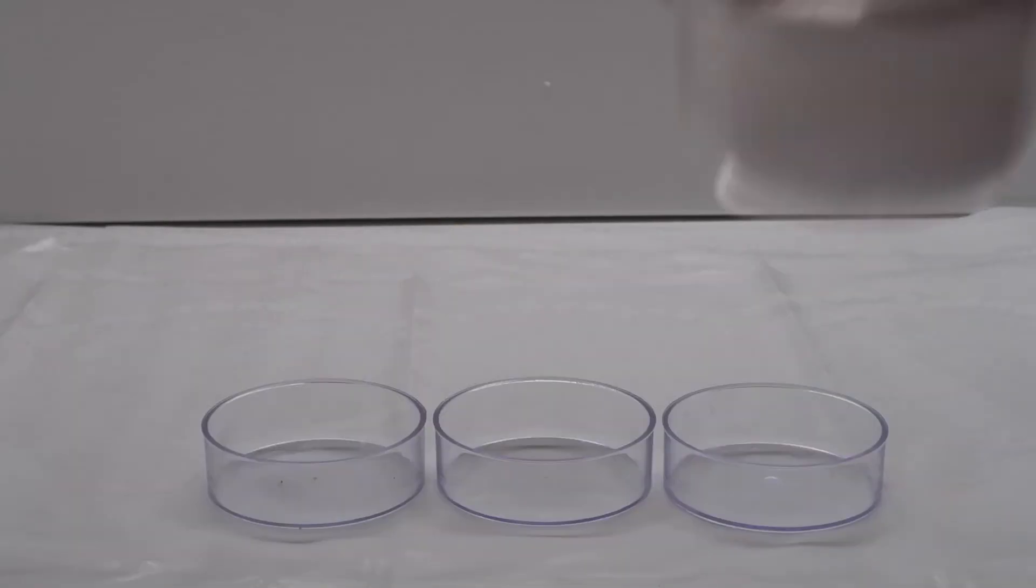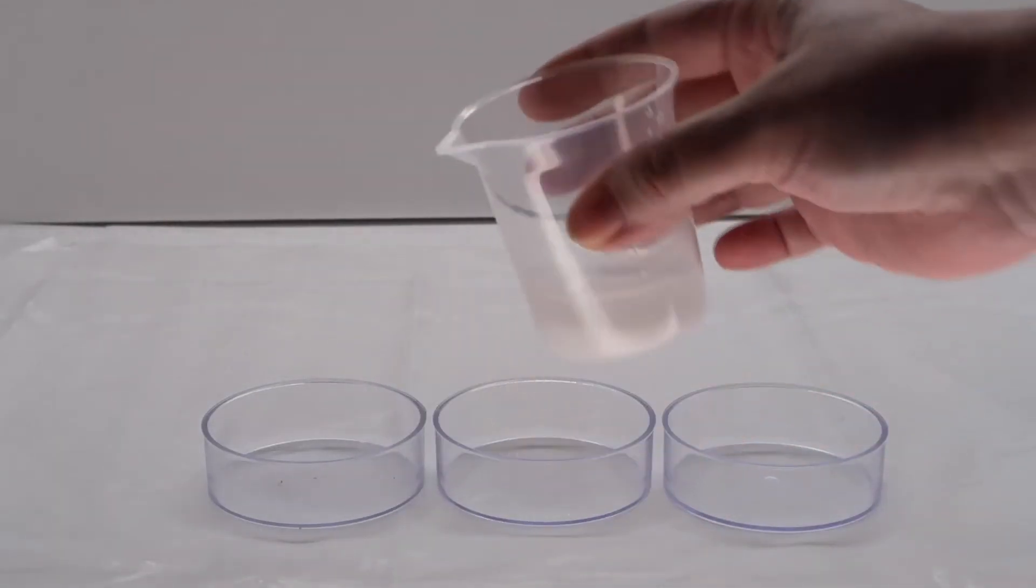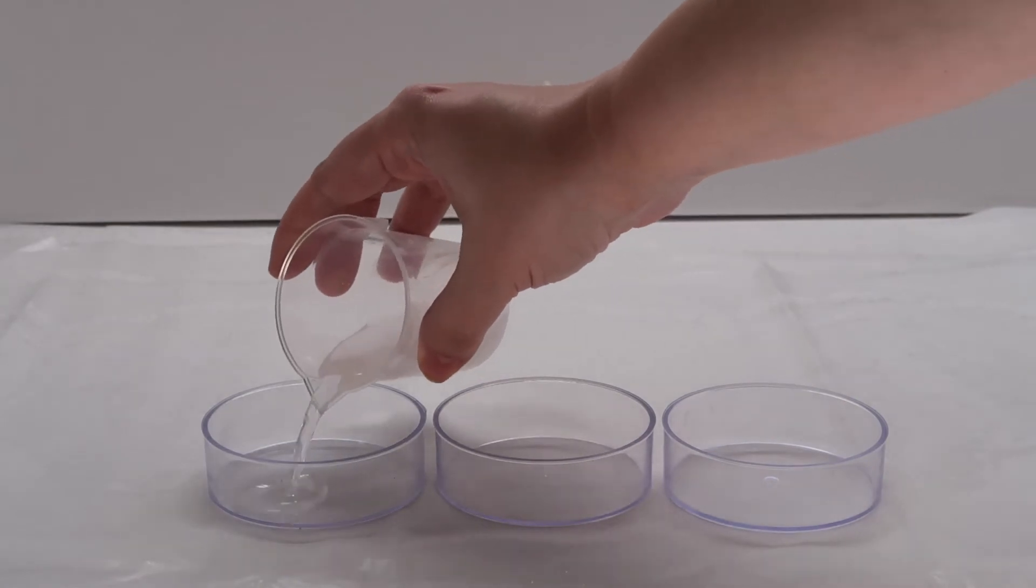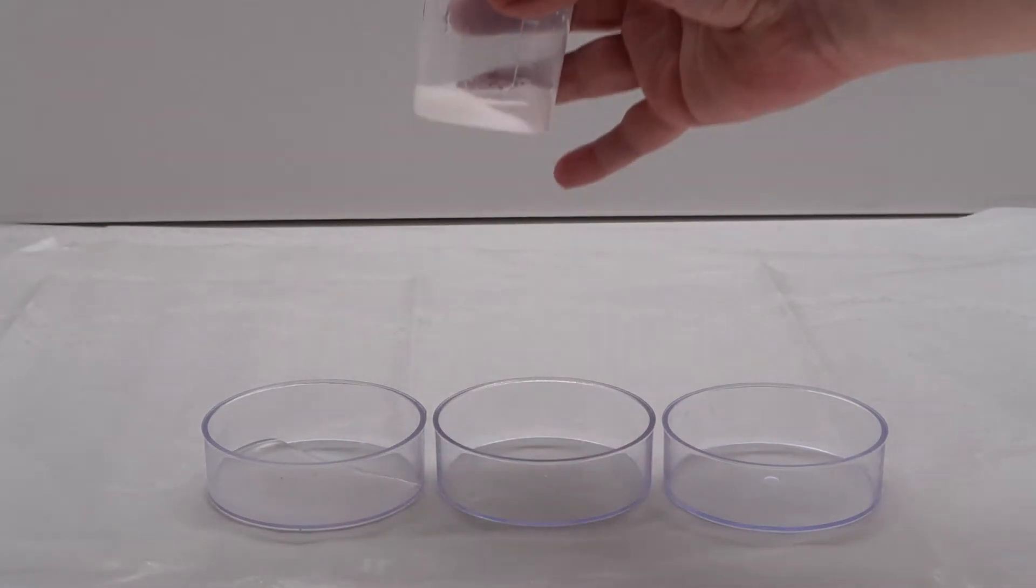Next, set out your 3 petri dishes and put the salt solution into 2 of the dishes. Leave one dish empty.